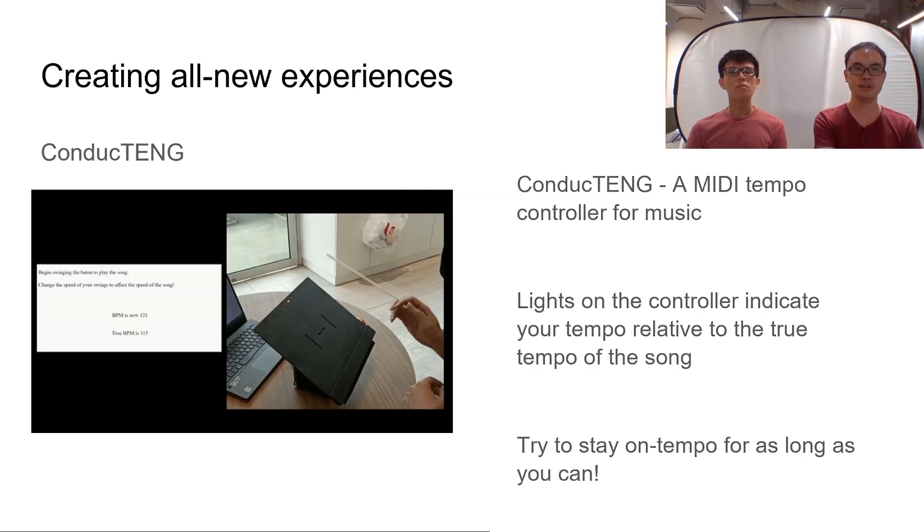And finally we have Conducting, our example of a brand new experience made possible with the ESSense system. Built using a playback speed function in p5.js, this game plays a music track in accordance with the tempo you swing a button at. Players can try to match the original tempo of their song of choice, or they can try to simply mess with the song speed just for fun.